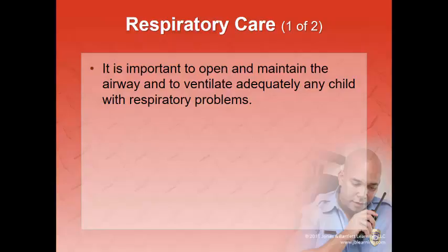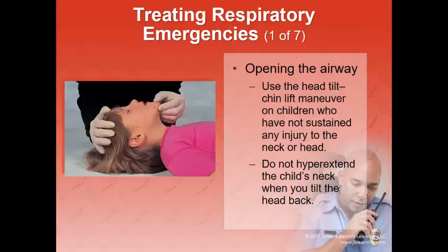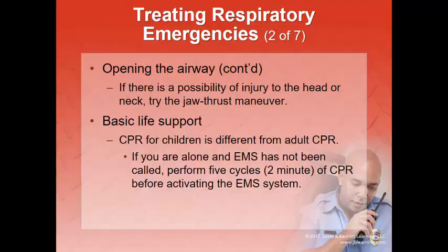Keeping the airway open is vital — pad under the shoulders if needed and decide whether to oxygenate or ventilate. The leading causes of cardiopulmonary arrest in children include suffocation, choking on a foreign body, infections like croup or epiglottitis, SIDS — which begins as respiratory arrest progressing to cardiac arrest — accidental poisoning, and head trauma. For non-trauma patients, use a head-tilt chin-lift, but only to a light sniffing position, not extended as far back as in adults. If injury is suspected, use a jaw thrust maneuver instead.